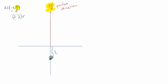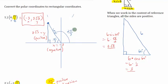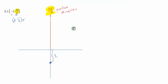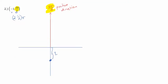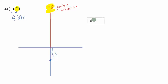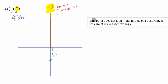Now, what I need to do is convert that point to rectangular. If we look at the last example, the point we had landed in the middle of a quadrant, resulting in this right triangle setup. In this problem, this point does not land in the middle of a quadrant. So we cannot draw a right triangle. It's actually much simpler than that.